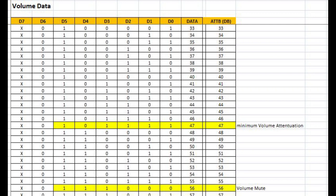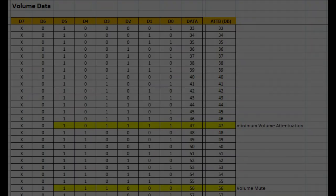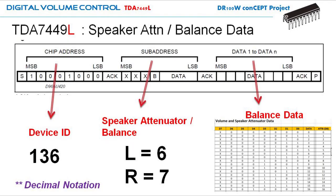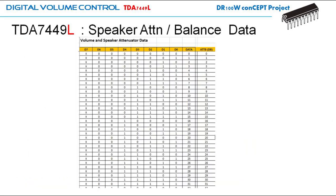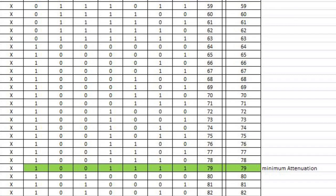And finally for the speaker attenuator or balancer, which comes with more data — about 80 data values to choose from, from 0 dB to minus 79 dB in attenuation, followed by mute in 1 dB steps.